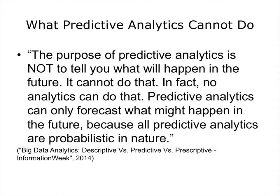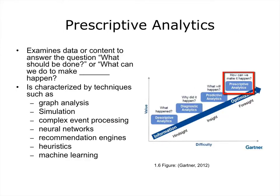This brings us to the highest level of analytics, which is prescriptive analytics. Gartner defines prescriptive analytics as a form of advanced analytics which examines data or content to answer the question, what should be done, or what can we do to make something happen? It is characterized by techniques such as graph analysis, simulation, complex event processing, neural networks, recommendation engines, heuristics, and machine learning.